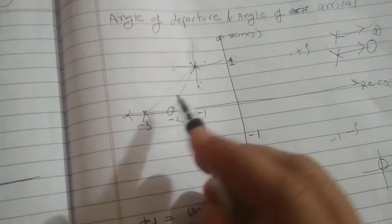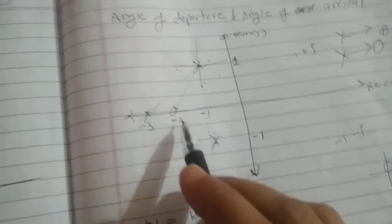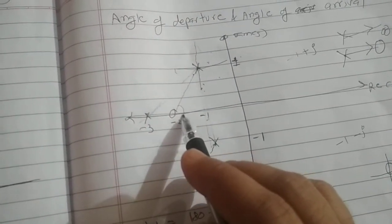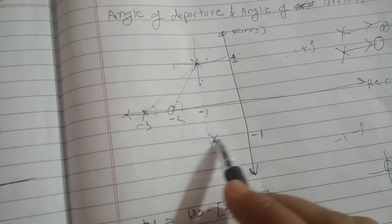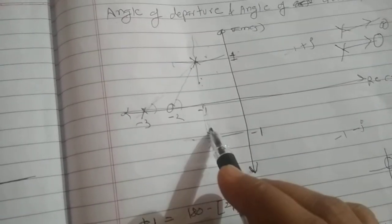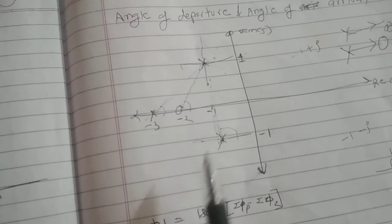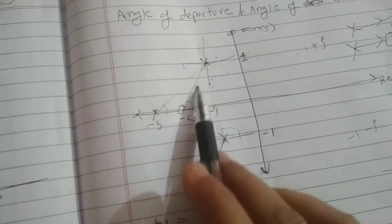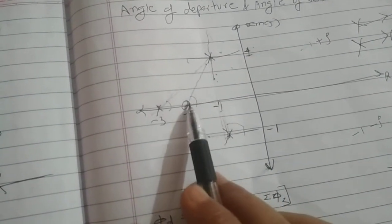After that, you have to measure the angle of these lines with respect to the positive x-axis. So you have to measure this angle, this angle, and this angle. That is the second step.